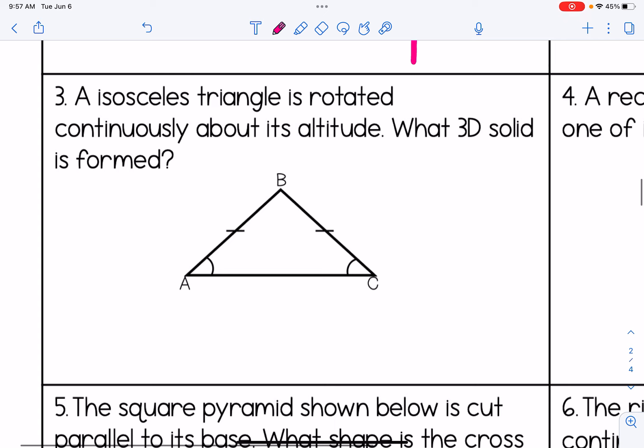Number three, an isosceles triangle is rotated continuously about its altitude. What 3D solid is formed? Let's draw in the altitude here. So the altitude starts at that top vertex of an isosceles triangle and is perpendicular to the base. So imagine we're rotating it. For instance, let's start with point C. If we're rotating it, it's going to eventually land where A is. And A is going to land where C is.